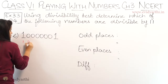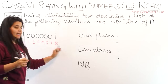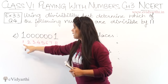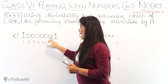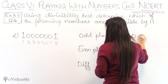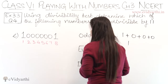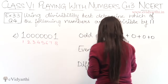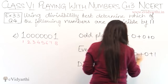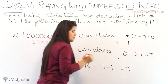We have 8 digits. The odd place digits are 1, 0, 0, and 0. Adding them: 1 plus 0 plus 0 plus 0 equals 1. Now for even places, we have 0, 0, 0, and 1. So, 0 plus 0 plus 0 plus 1 equals 1. The difference is 1 minus 1, which equals 0.